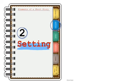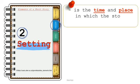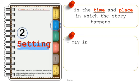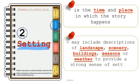The next element of a short story is the setting. It is the time and place in which the story happens. You may ask questions like when and where the story is taking place. Aside from that, it may include descriptions of landscape, scenery, buildings, seasons, or weather to provide a strong sense of setting. It sets the mood and helps us guess what might happen in the story.